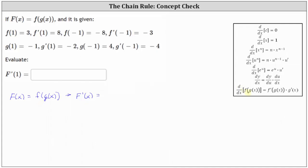The derivative of F of G of X with respect to X is equal to F prime of G of X, which is the derivative of the outer function evaluated at the inner function, and then we have times G prime of X, which is the derivative of the inner function. So Big F prime of X is equal to F prime of G of X times G prime of X.